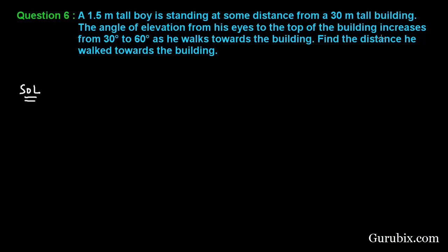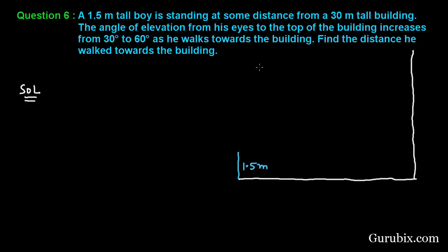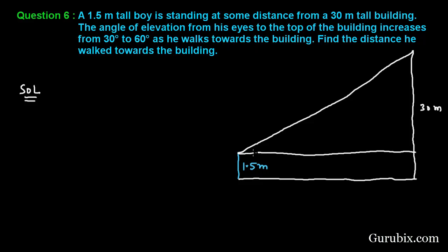Let us draw the rough sketch of the figure using the information given in the question. Suppose this is the ground, and this is the height of the boy, that is 1.5 meters, and here is the 30 meter tall building. At this stage, when the boy looks at the top of the building, the angle of elevation is 30 degrees. This is the line of sight and this is the horizontal level.